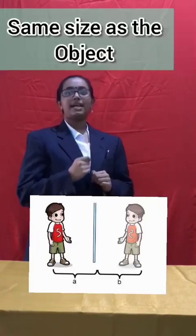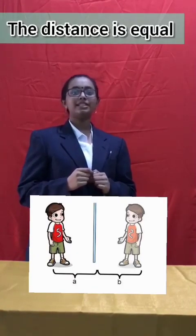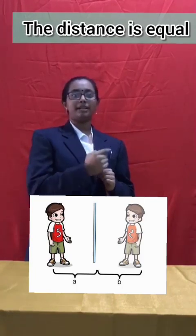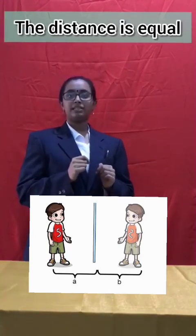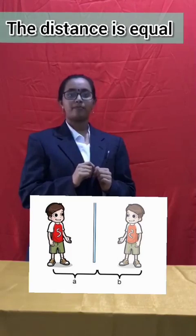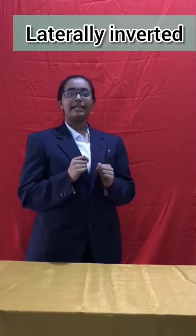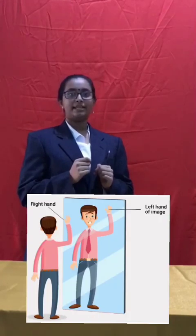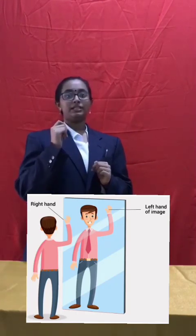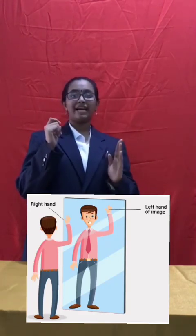The next characteristic is the image formed is upright. Can you see the image is slightly upward and bright side? Another characteristic of the image formed is same size as the object. The distance between the object and the mirror is the same as the distance between the image and the mirror. Last but not least, the image formed is laterally inverted, where the right side of the image is formed from the left side of the object.